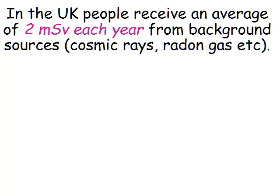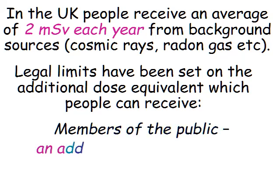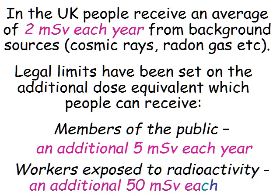In the UK we receive about two millisieverts each year from background sources — naturally occurring radiation such as cosmic rays and radon gas. The additional permitted limit on top of background is five millisieverts per year, giving about seven in total. If you work in a nuclear plant or nuclear weapons establishment, you're allowed to be exposed to up to an additional 50 millisieverts per year.